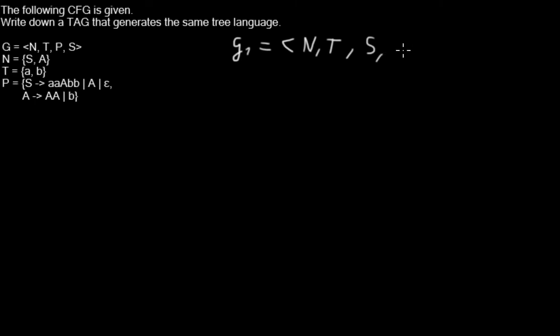And in the tree-adjoining grammar, we are having a set of initial trees and auxiliary trees. Well, the set of auxiliary trees is also very easy because in this case it's just empty. That's because the auxiliary trees or the adjunction, it's what makes the tree-adjoining grammar more powerful than a context-free grammar. So if we don't have any adjunction and only substitution, the tree-adjoining grammar will be as powerful as a context-free grammar.